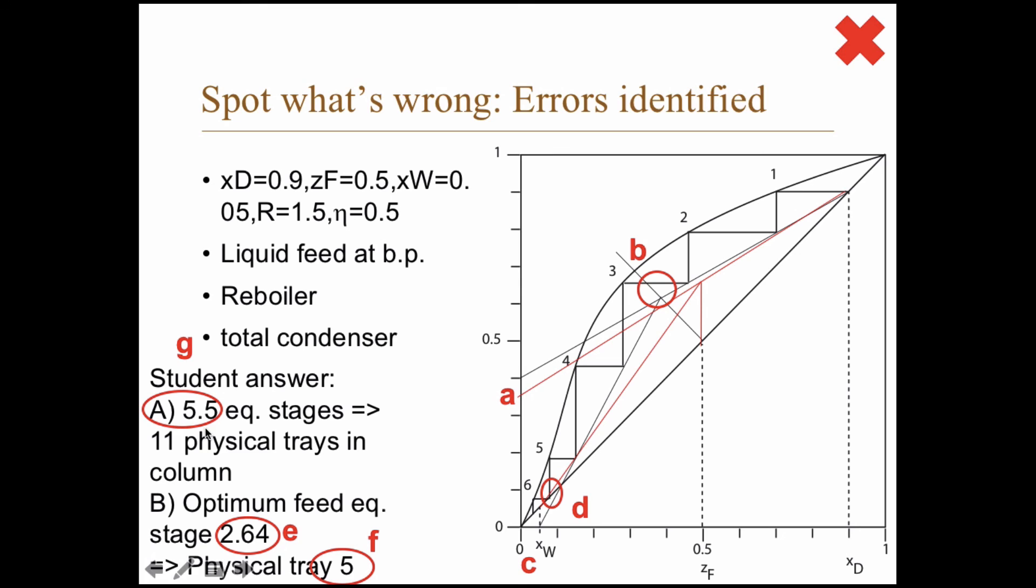G. 5.5. Well, the first thing is to actually have a reboiler. So 5.5, you need to deduct 1 from there to get 4.5. And then 4.5 divided by 0.5, that's 9, not 11.